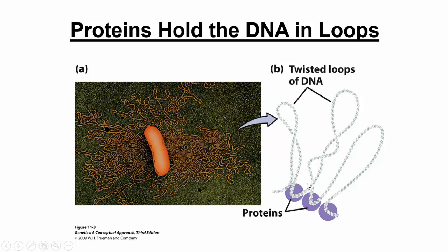Proteins are associated with bacterial DNA to compact them. In a second, we'll talk about eukaryotic DNA, and I'll use the word histone. Bacteria don't have histones, to our knowledge. The proteins we're talking about are similar proteins to histones, but not as complex.